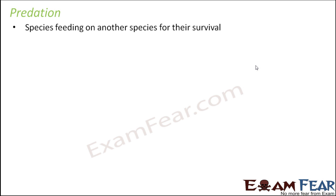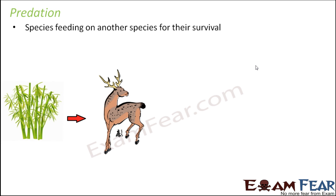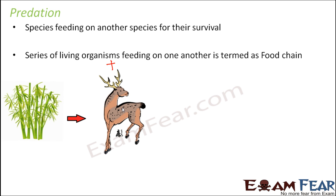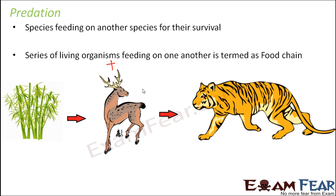Predation is about one species feeding on another species for their survival. For example, the deer feeds on plants because the deer needs to survive and the food is in the form of plants. So the deer is benefited, but the plant is harmed because it is being eaten up. Similarly, the deer in turn is eaten up by another organism like the lion or tiger. So the tiger is benefited, but the deer is not. Basically in predation, one organism eats the other — one organism is benefited, but the other is harmed.